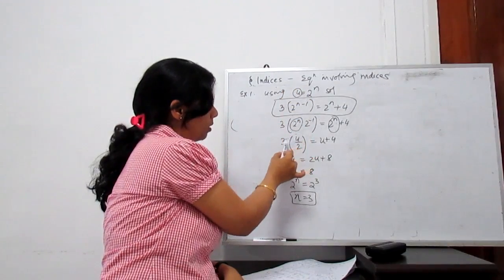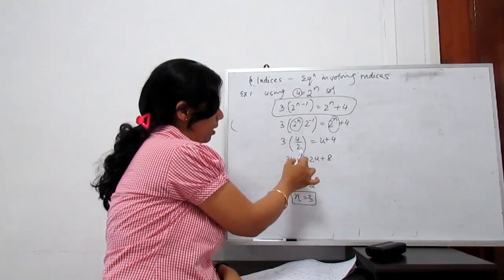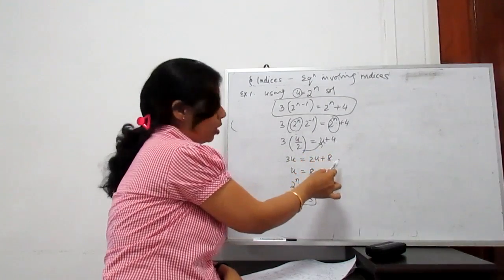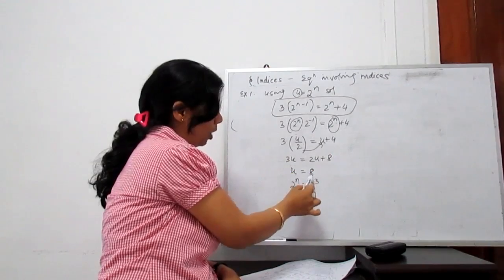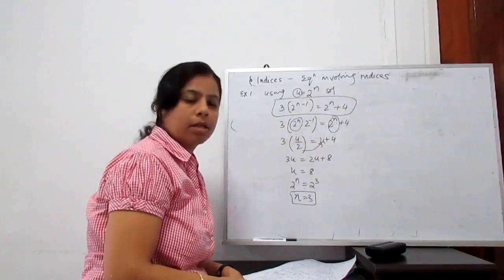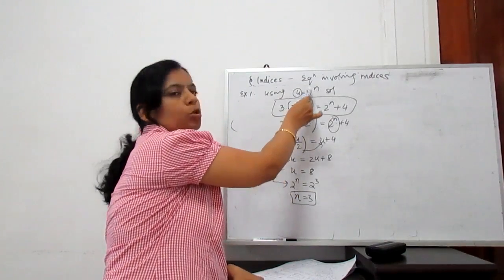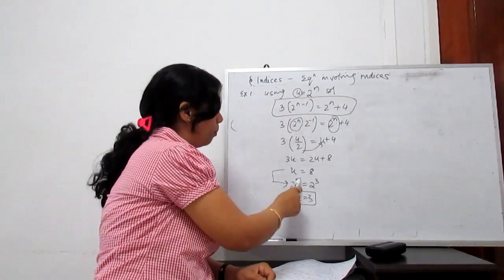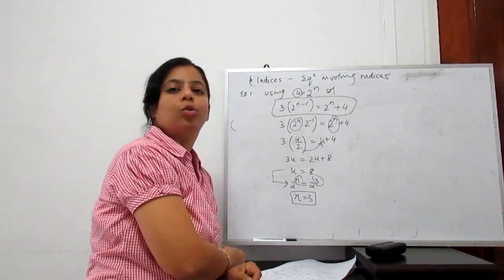So we get 3u over 2 equals u plus 4, since 2 to the power minus 1 is one half. Simplifying: moving u to the left gives 3u minus 2u equals u, and 4 times 2 is 8. So u equals 8. Rewriting 8 as 2 to the power 3, and replacing u with 2 to the power n: since 2 to the power n equals 2 to the power 3, comparing both sides gives n equals 3.